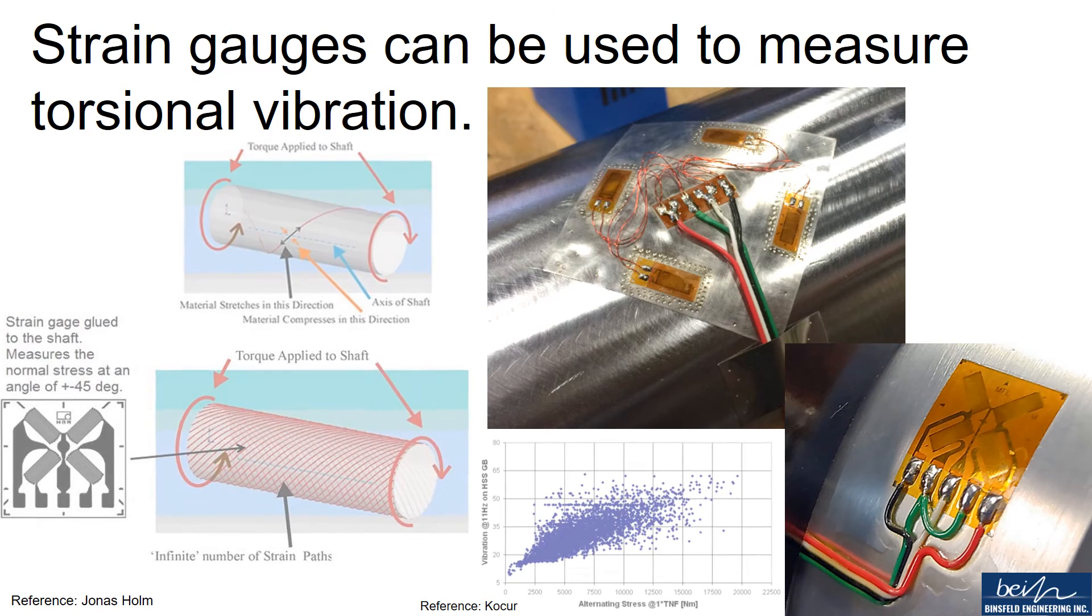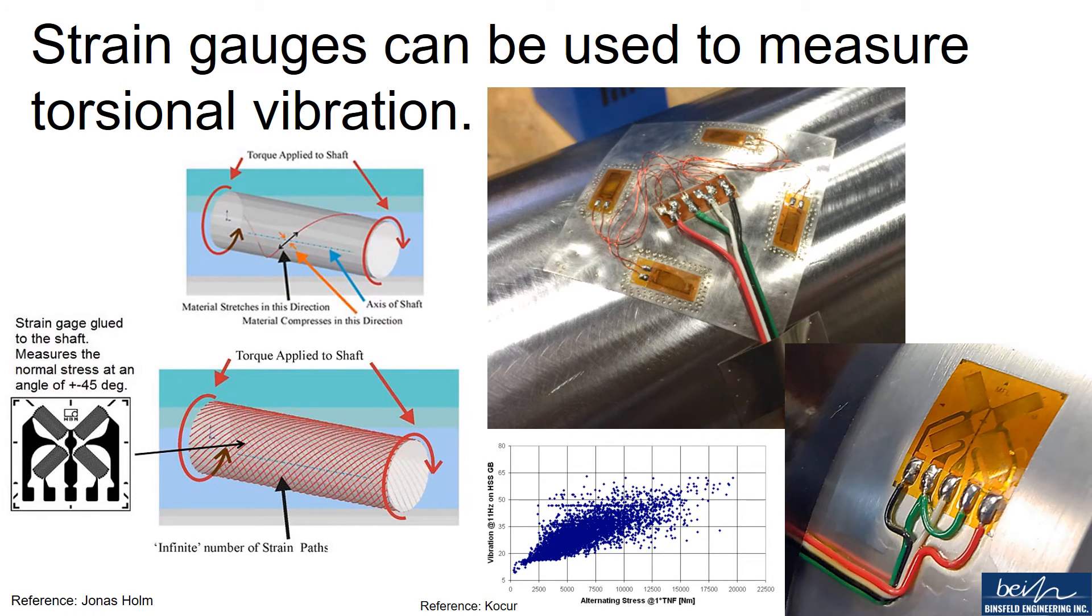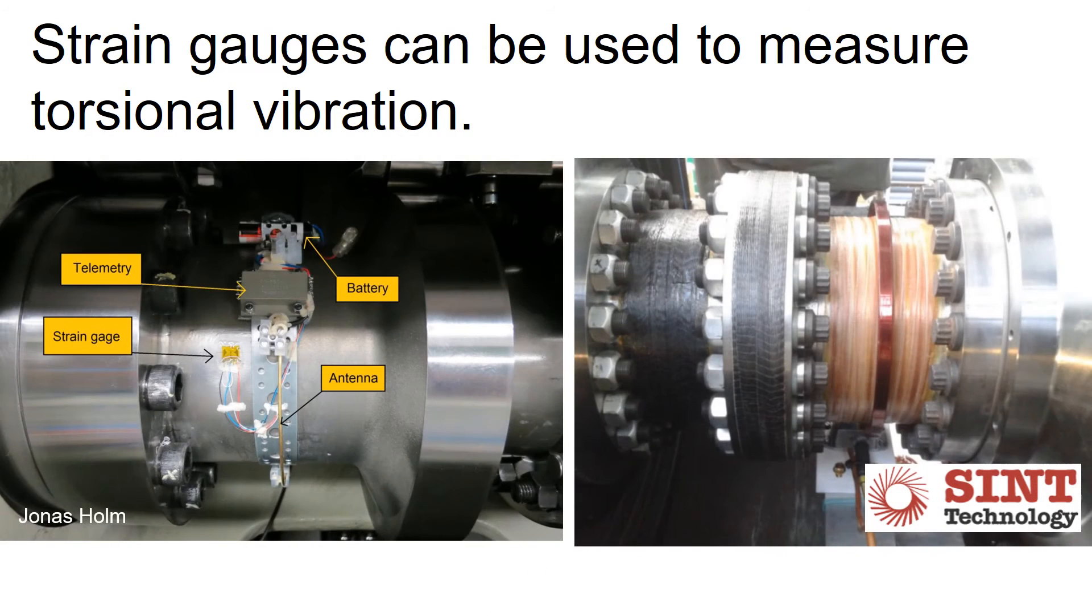There is a relationship between the strain gauge measurements to the torsional vibration amplitude. Strain gauge can be utilized to estimate the amplitude of torsional vibrations occurring within the shaft, coupling, and many other locations. There are many examples of using strain gauge to measure torsional vibration, and few examples are shown here.